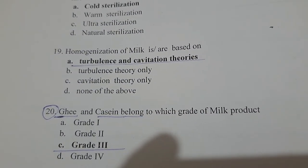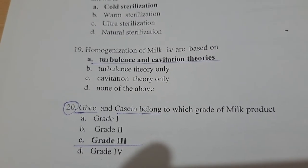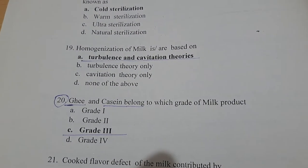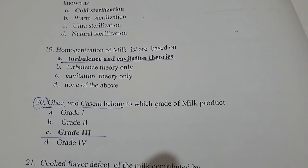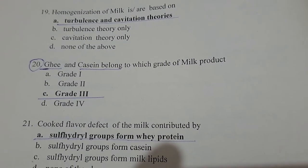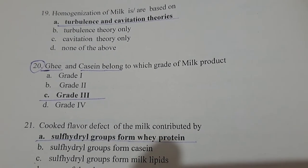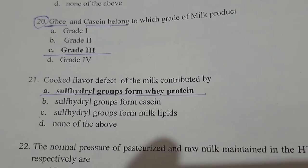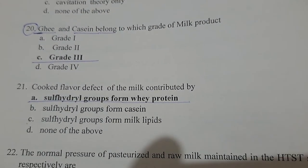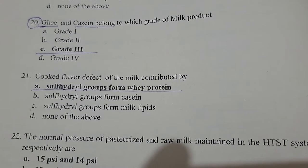Question 11: Homogenization of milk is based on turbulence and cavitation theories. Ghee and casein belong to Grade 3 (third grade) of milk products.